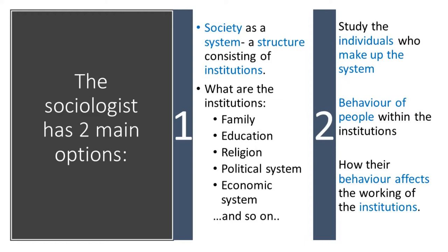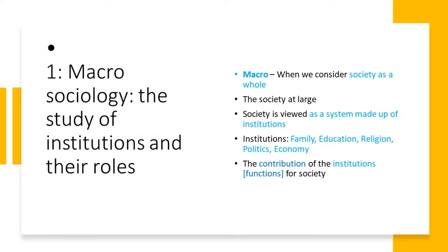These are big, large structures — we are looking at the system as a whole. However, the institutions are made up of individuals. The sociologist therefore has a second option of looking at the behaviour of people within the institutions. So when we speak of macro sociology, we are talking about society as a whole, the society at large — society viewed as a system made up of institutions.